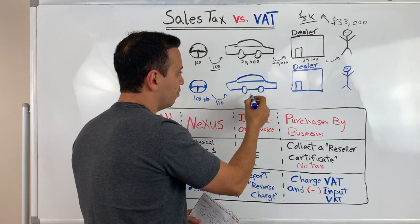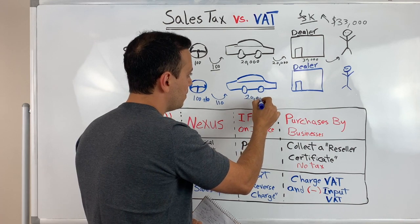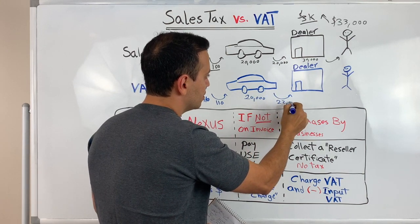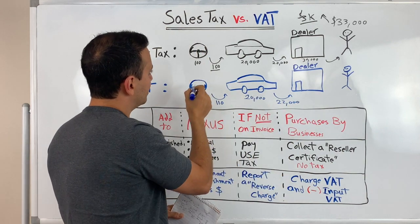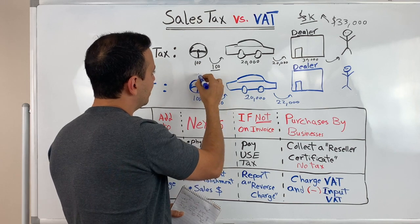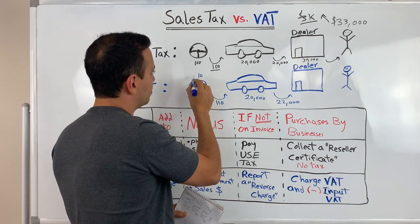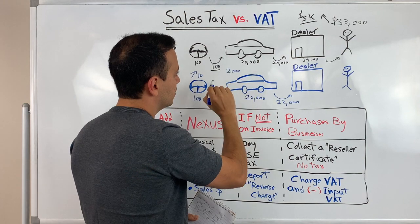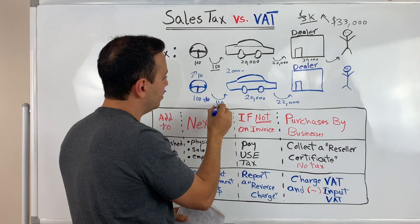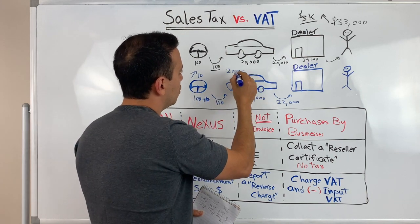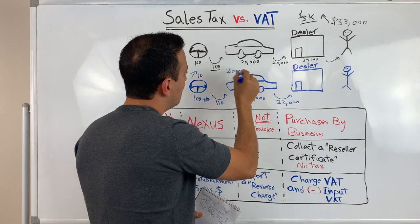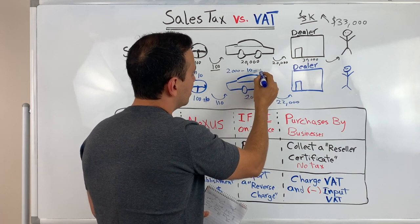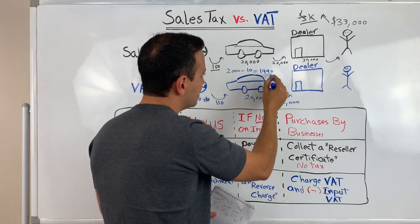The car manufacturer wants to sell the car to the dealer for 20,000 euros. They add 10%, which is 2,000, so they send an invoice for 22,000 euros. The steering wheel manufacturer collected 10 euros in VAT and reports that to the government. The car manufacturer collected 2,000, but they get to deduct the 10 euros they paid to the steering wheel manufacturer. So 2,000 minus 10 euros — they only remit 1,990 euros to the government.